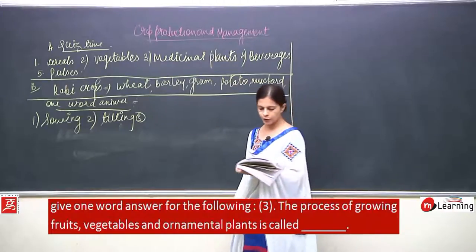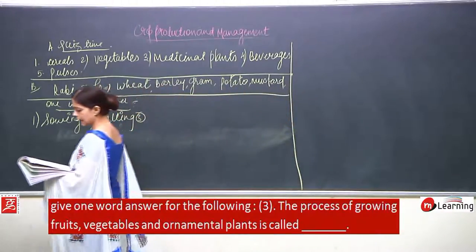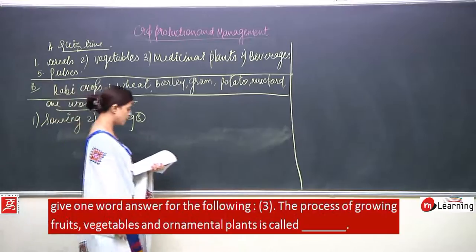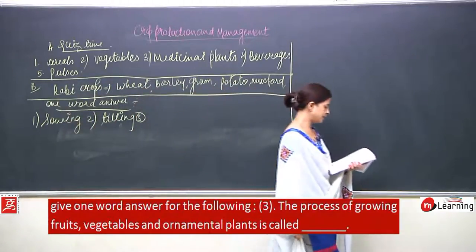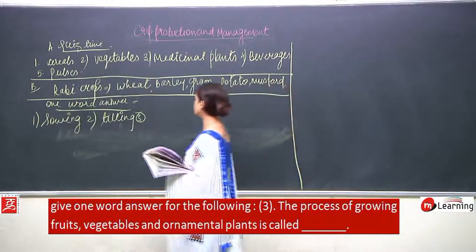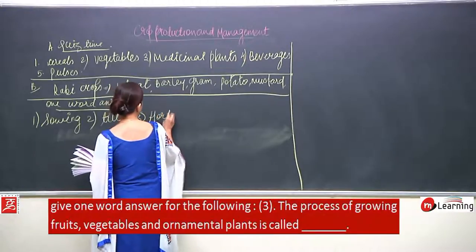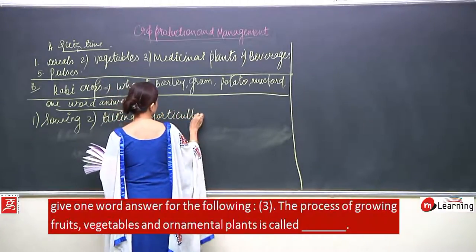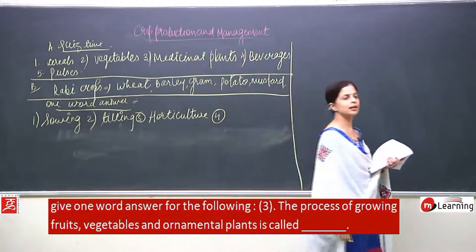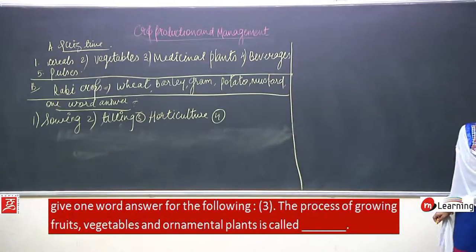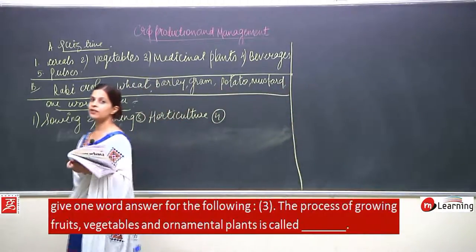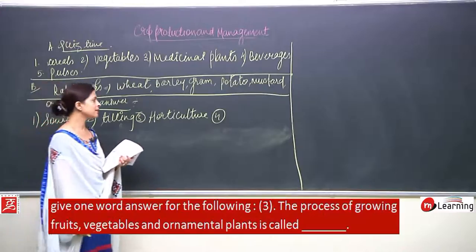Number 3: the process of growing fruits, vegetables, and ornamental plants is known as horticulture. If you remember, we have discussed many such topics — please have a look over there also.